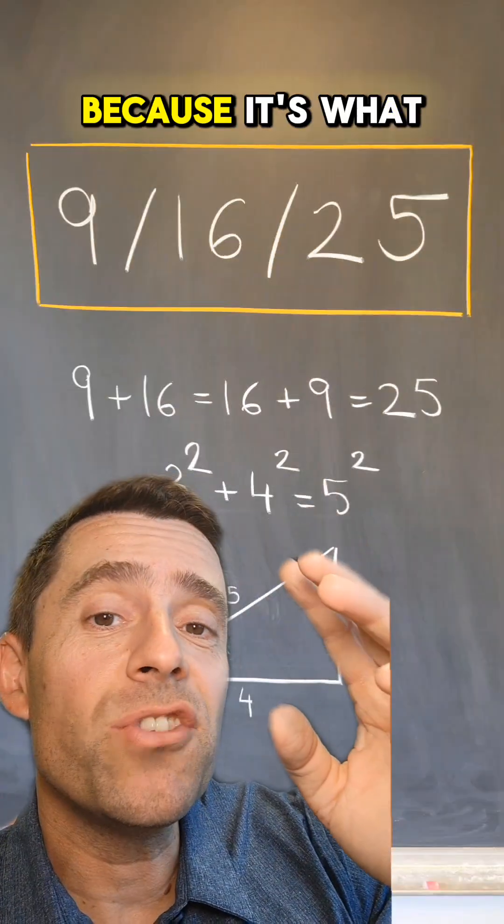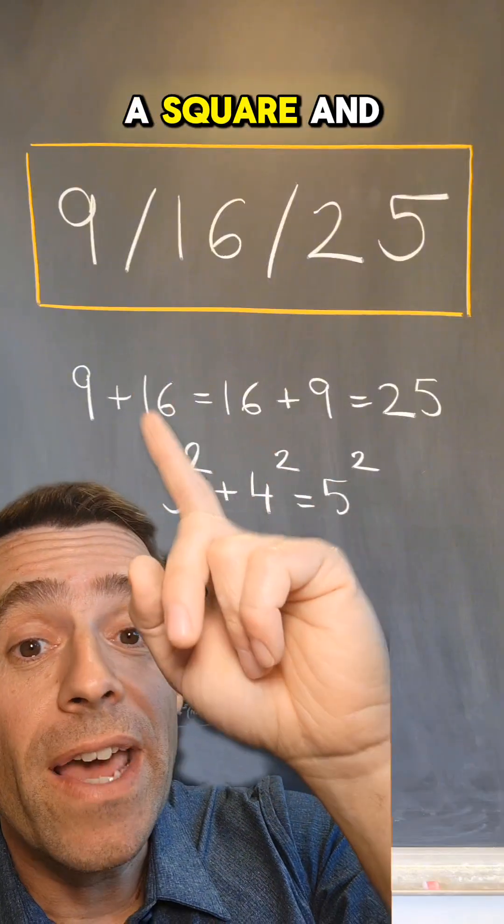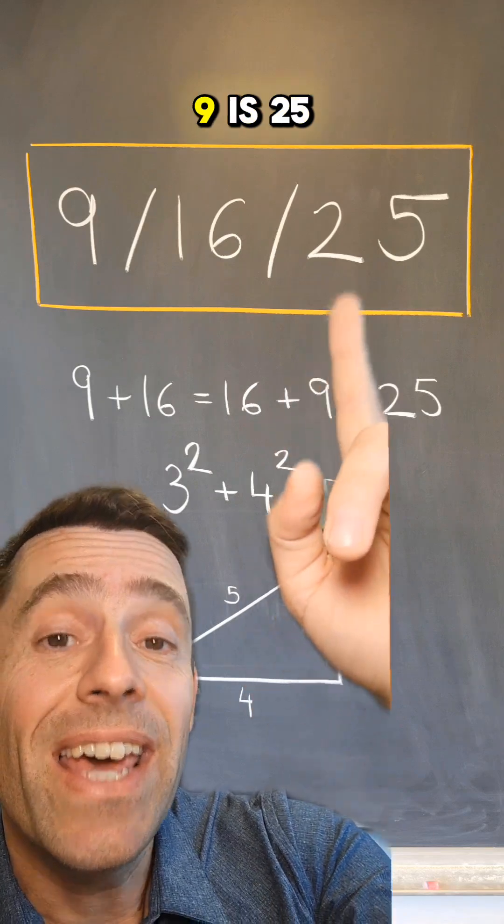This is a really cool date because it's what I call a strong Pythagorean date. Each number is a square, and the sum of the squares, 9 plus 16 or 16 plus 9, is 25.